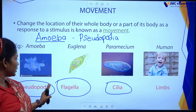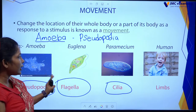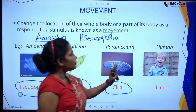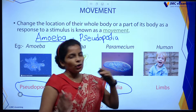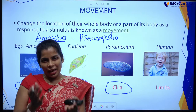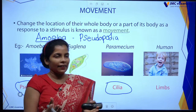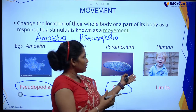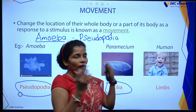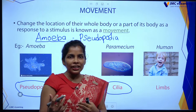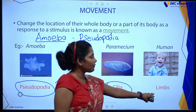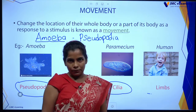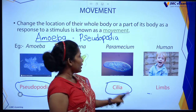Now, human is a famous example. What is the appendage that humans use? It is definitely limbs. So now we have the idea of what movements these animals show.